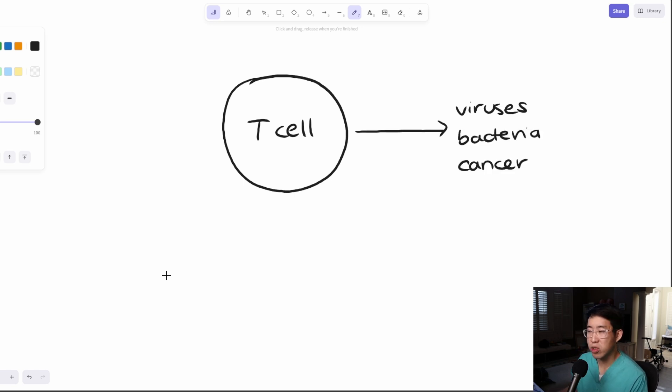So obviously the T cell is an extremely important part of our host defense, but one of the problems that can happen if they become too over activated is that it can start to attack your own body, leading to all sorts of autoimmune diseases.